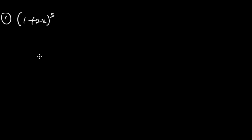The first example: use the binomial theorem to expand (1 + 2x)^5. In binomial expansion one of the fastest approaches is to simplify the expression so that 1 is the first term. In this case you already have 1 as the first term. In some examples you might not have 1 as the first term, so you first factorize the expression to ensure 1 is the first term.